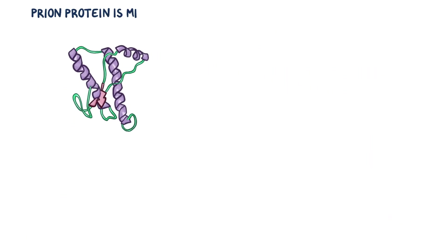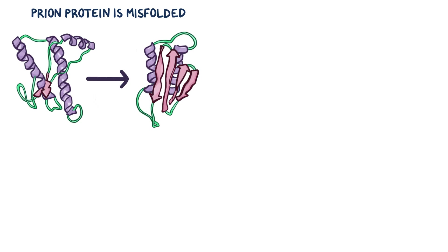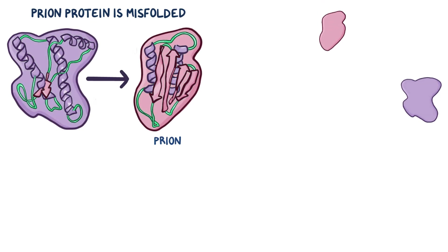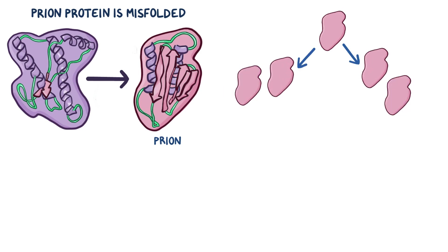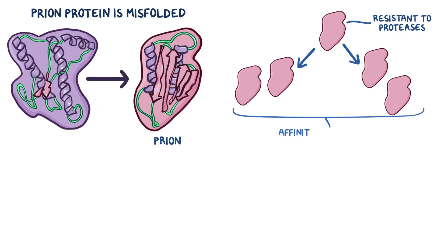When a prion protein is misfolded, it changes from mostly having alpha helices to having a lot of beta-pleated sheets. This new abnormal protein is called a prion. When the misfolded protein enters the cells of the nervous system and interacts with the normal prion protein, it acts as a template and induces misfolding in the normal prion proteins. These prions are highly resistant to being broken down by proteases, which are the enzymes that break down abnormal proteins. These misfolded prion proteins cannot be easily broken down, they cause normally folded proteins to misfold, and they have an affinity for the brain — they're basically like little beta-sheet-filled zombies.